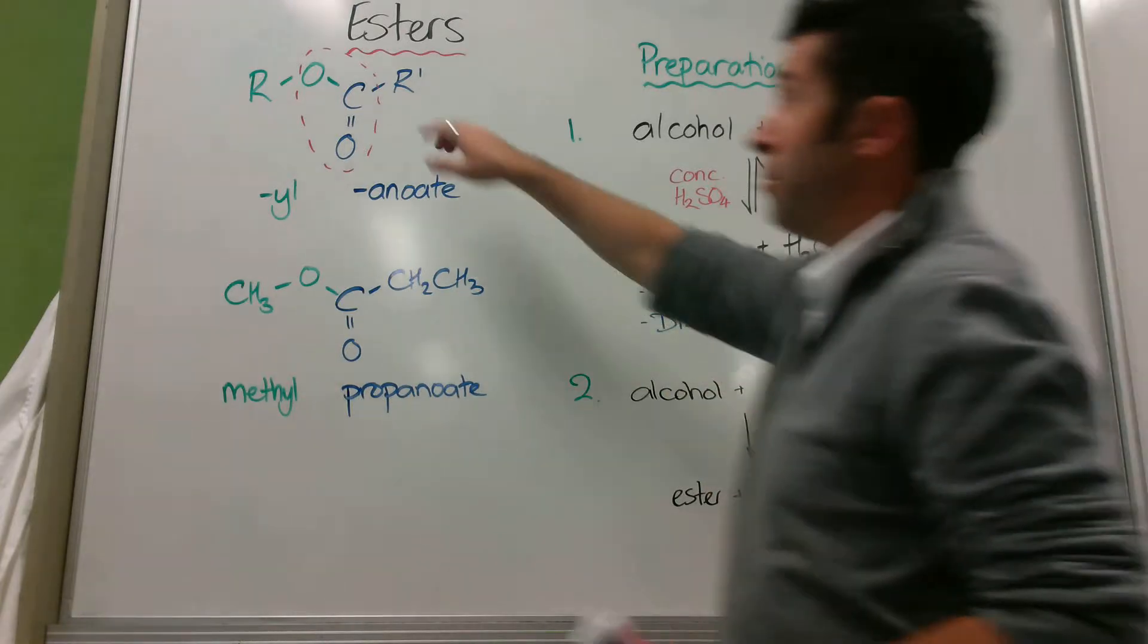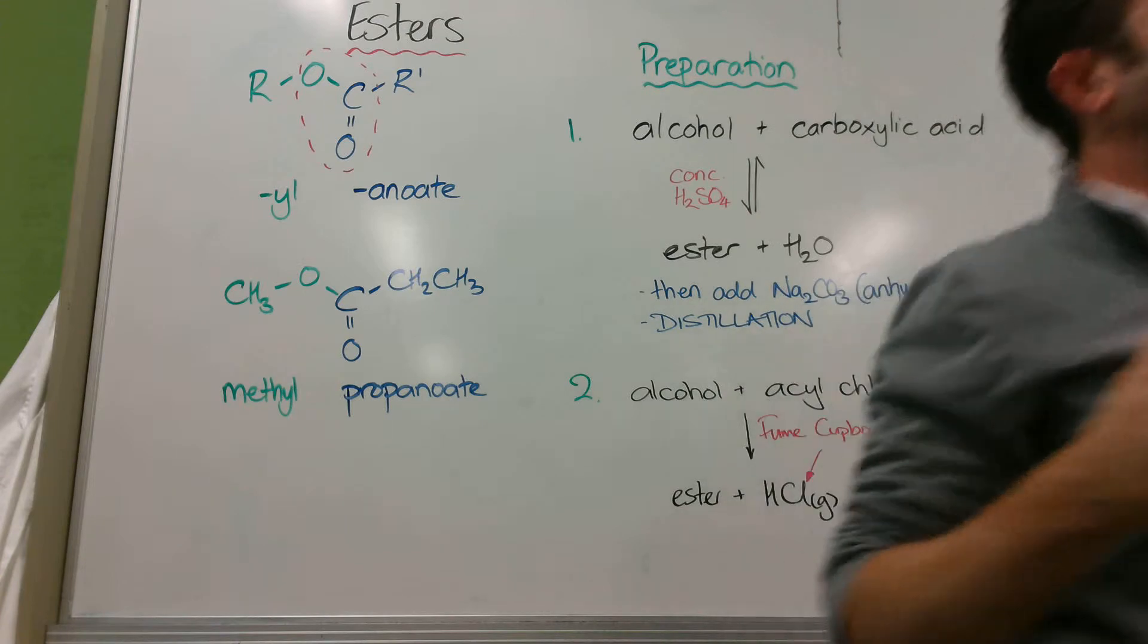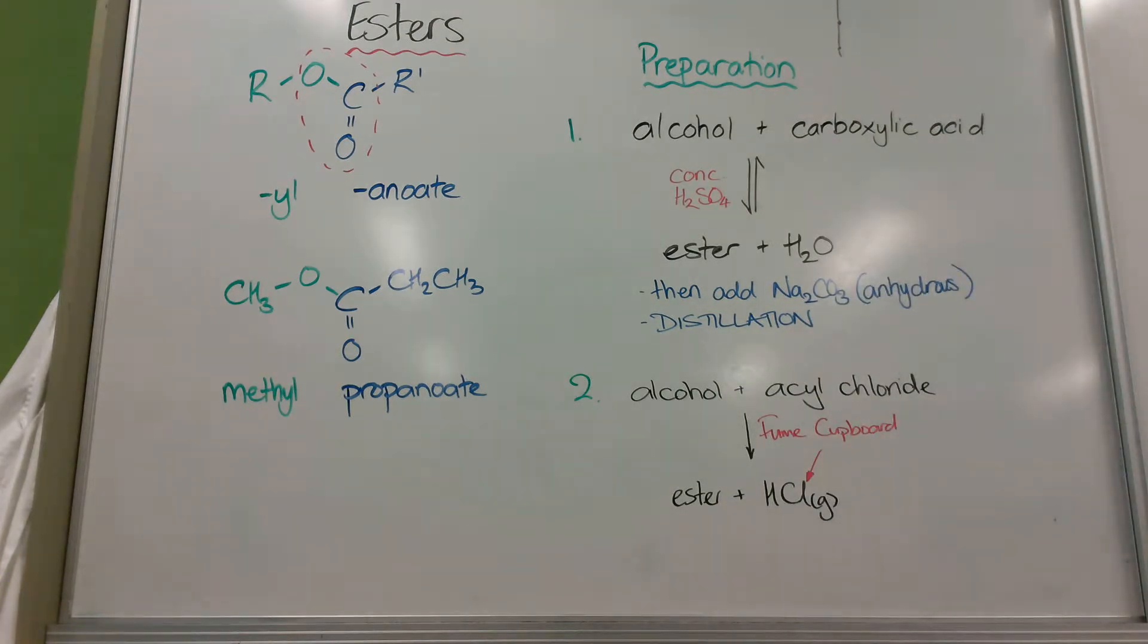The reason that it makes two layers is even though it's got polar bonds within it, normally the carbon chains either side are long enough that these are non-polar molecules. So there's no permanent dipole in them. This makes them sit on top of our aqueous layer or our alcohol and carboxylic acid layer and we did the reaction.